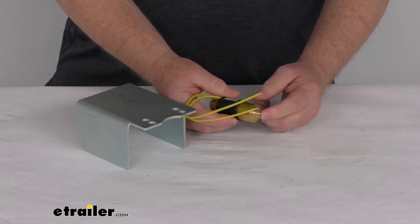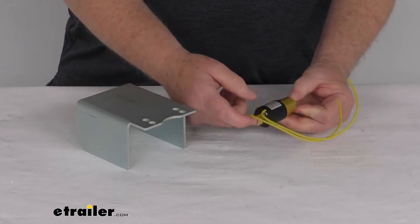Basically this portion here will just thread into the back of your actuator and then your brake line connects right there.